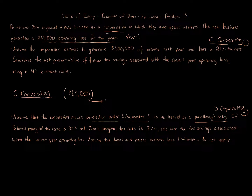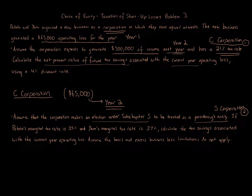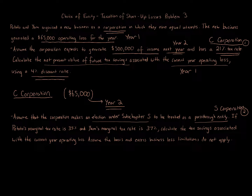We carry that loss forward to year two. We're told the corporation expects to generate $500,000 of income next year, so there will be enough income to use the loss. The corporation is subject to a 21% tax rate. We need to calculate the net present value of the future tax savings associated with the current year operating loss — that is, the year one loss of $65,000 — using a 4% discount rate.